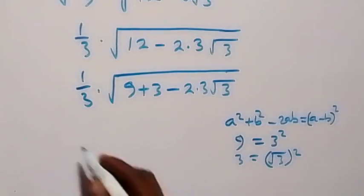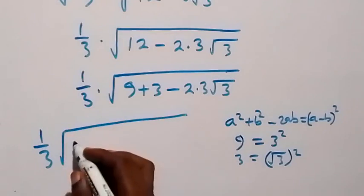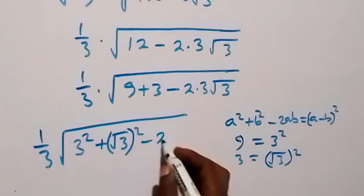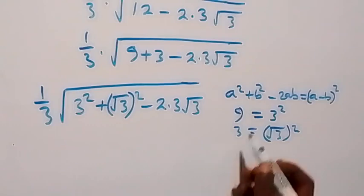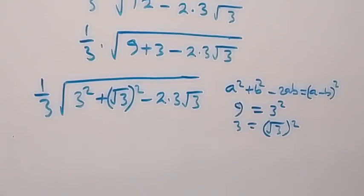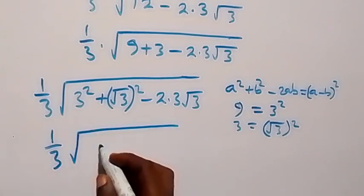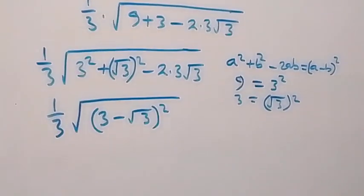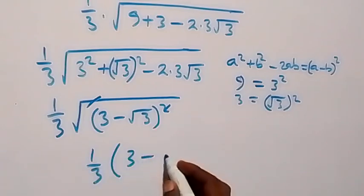So what we have becomes 1 over 3 times square root of 3 squared plus root 3 squared minus 2 times 3 times root 3. Here a is standing as 3, and b is standing as root 3. This reduces to 1 over 3 times square root of a minus b all squared, which is 3 minus root 3 all squared. The square and square root cancel, leaving 1 over 3 times bracket 3 minus root 3.